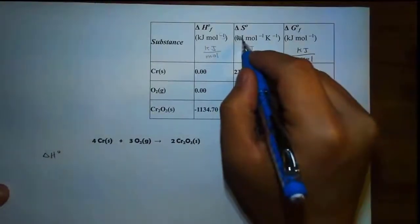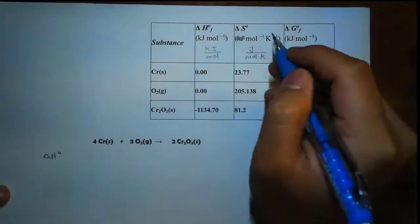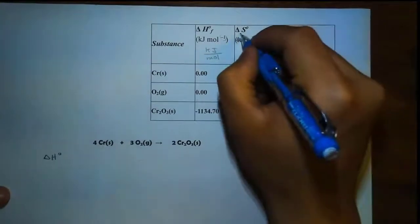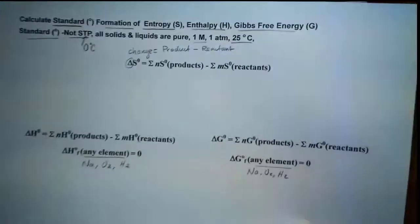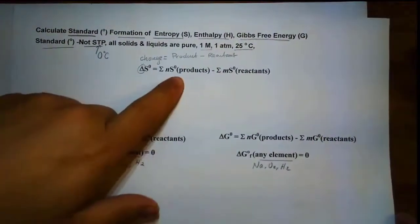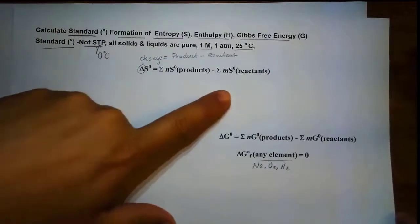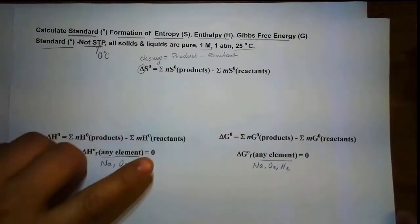There's a mistake right here — they're supposed to be joules rather than kilojoules. Let's go back to the equation again: it is the sum of products minus the sum of reactants for all of them.